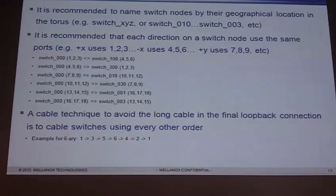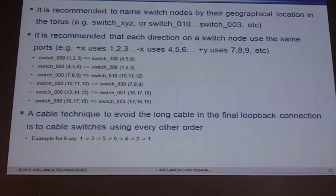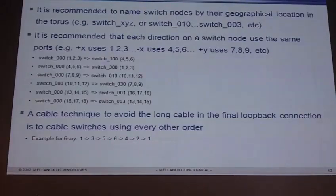Another trick: one thing people worry about when building Tauruses, especially with a long radix in a certain direction, is you can have short cable, short cable, short cable all the way down, but then you need a really long cable at the end for the wrap-around. One classic way to avoid this long cable is to cable switches in every-other order. For example, if I have six Tauruses in the X direction, I cable 1 to 3, 3 to 5, 5 to 6, 6 to 4, 4 to 2, and then 2 back to 1. They're close to each other — everyone is at most two nodes away physically.